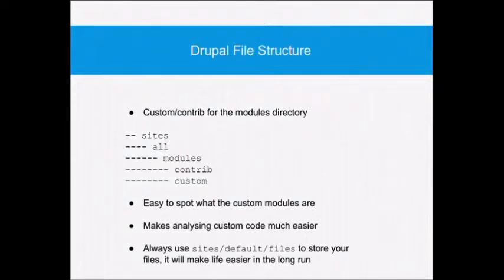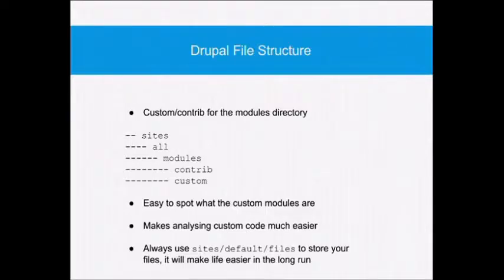So, Drupal file structure. What we do at Access — and I think lots of other Drupal teams adopt this — is use a specific structure. We've got the sites folder and then the all folder, and inside modules we split up into contrib and custom. All our custom code goes into custom, which makes it really easy to see what the custom code is doing. It also makes analysing and understanding that code much easier. Contrast that with having a folder list with hundreds of modules in it and trying to find the one that's custom versus a contrib module.